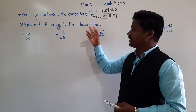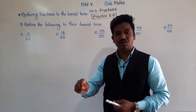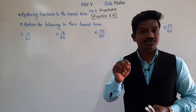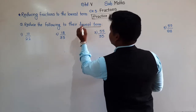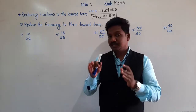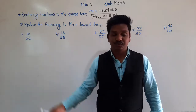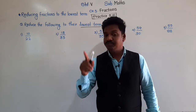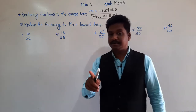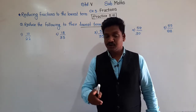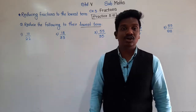Here we have to find the lowest term — smallest equivalent fraction — so we have to use the division method. To find the lowest term of a fraction, remember, we use division. That means we divide both the numerator and denominator by the same number. First of all, we have to find such a number by which both numerator and denominator are divisible.